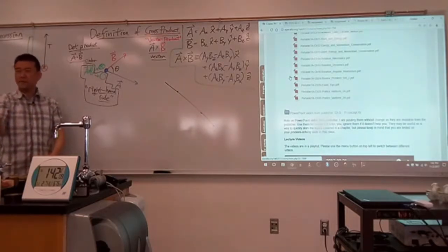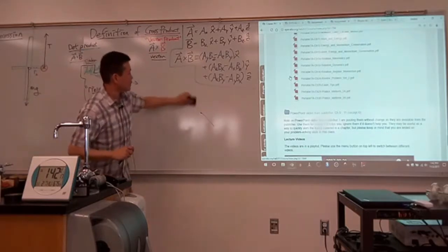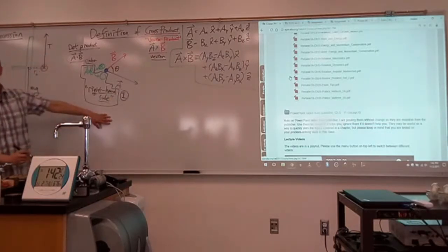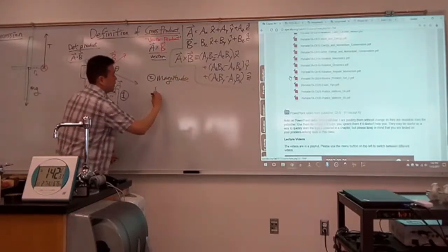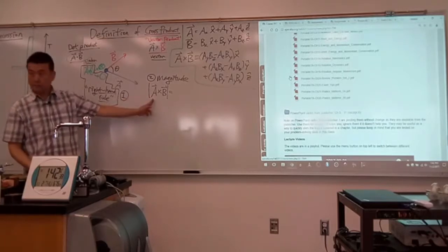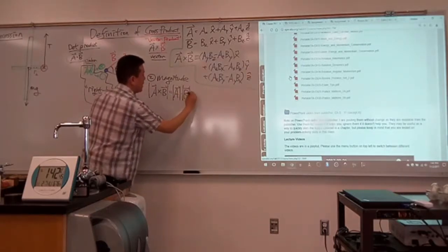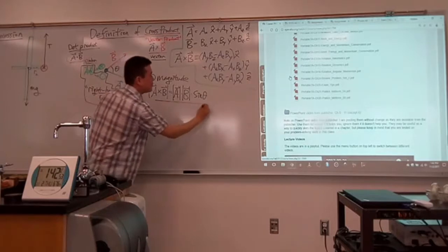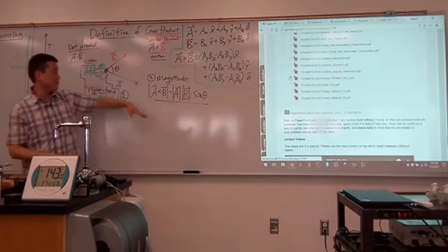So that's the first part of the definition of cross product: the direction of A cross B is perpendicular to the plane containing A and B, chosen by the right-hand rule. What else do I need to define a vector? The magnitude. The magnitude is defined as: |A × B| = |A| · |B| · sin θ, where θ is the angle between A and B.